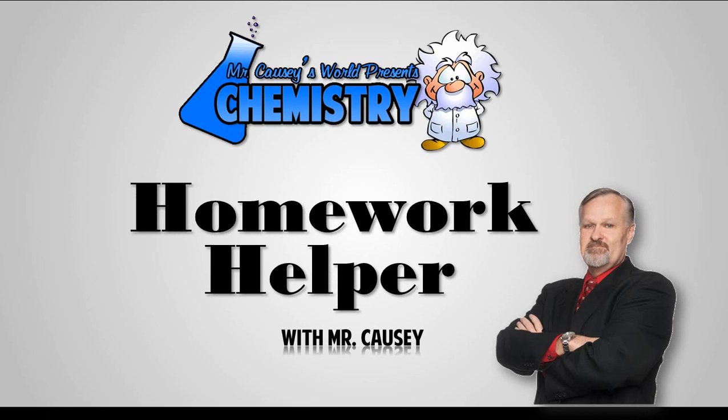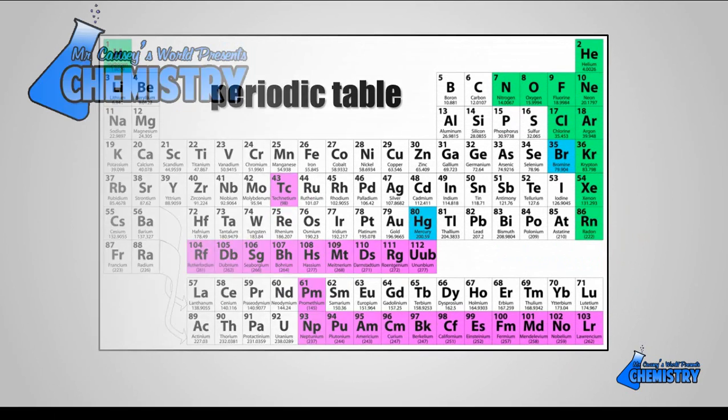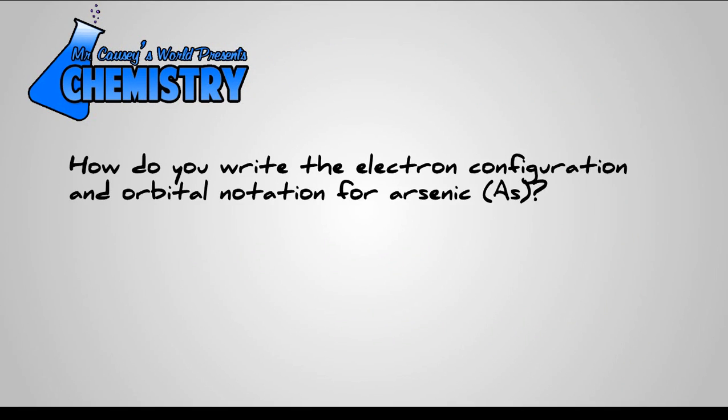Howdy everyone! Mr. Kazi coming to you from beautiful Atascasita, Texas with another homework helper. Let's get started. You're going to need a periodic table. How do you write the electron configuration and orbital notation for arsenic?